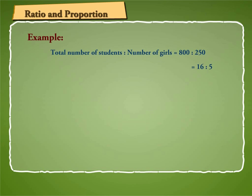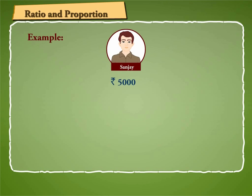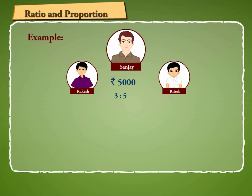Let us solve another example which uses ratio and proportion. Sanjay divides rupees 5000 between his sons Rakesh and Ritesh in the ratio 3 is to 5. Find the share of each of them.